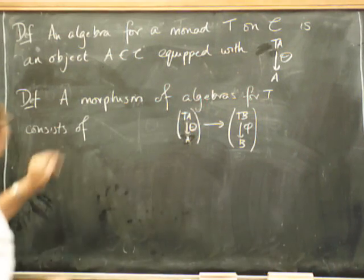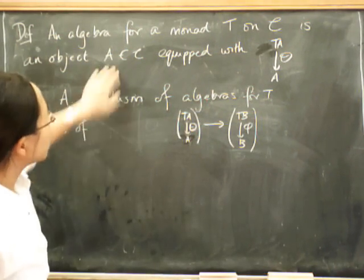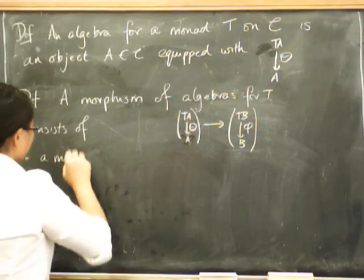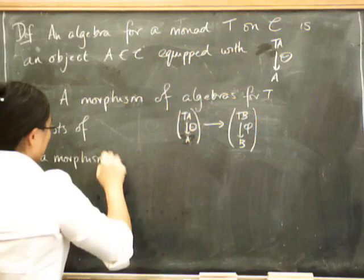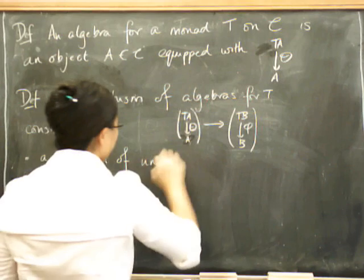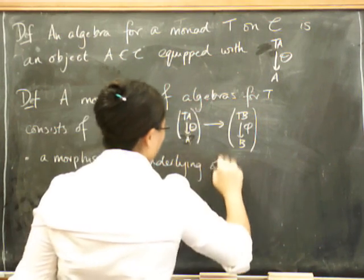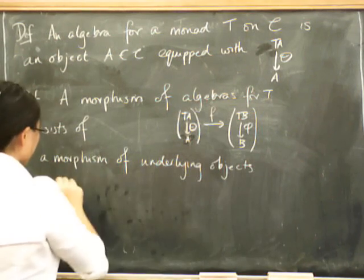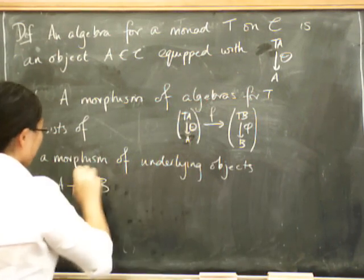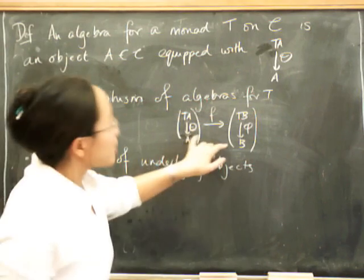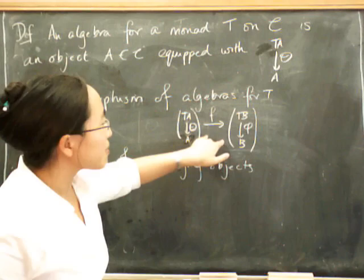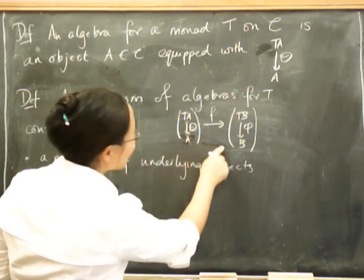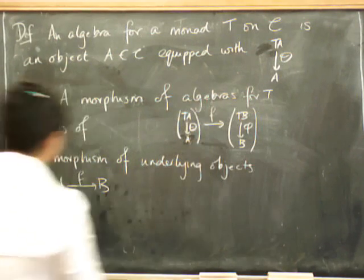So a morphism is going to consist of, first of all, a morphism of the underlying objects. So if this is F, it's called, of course, F going from A to B. Now you can probably hallucinate yourself into seeing what has to happen next. Because if F is going from A to B down here, then there jolly well ought to be something up here making all this commute.